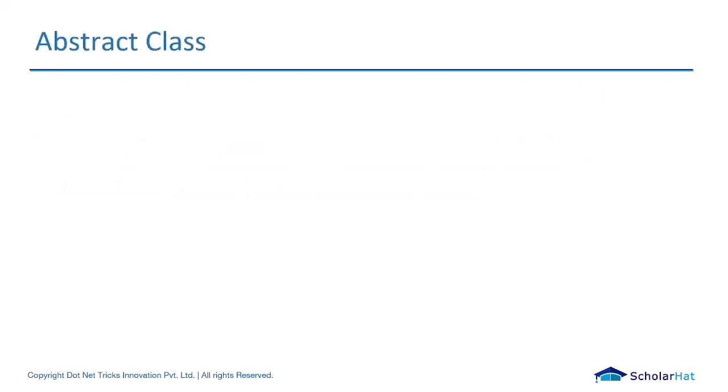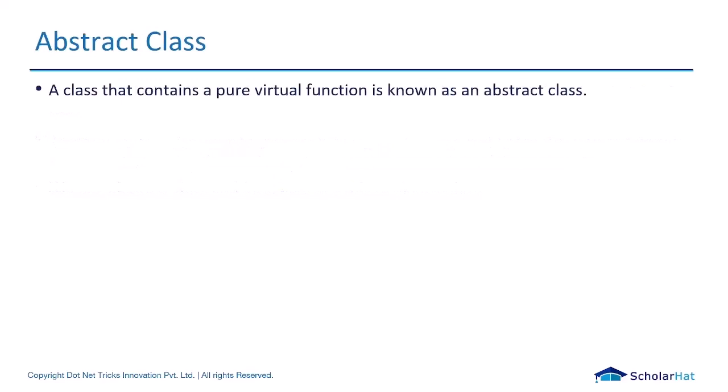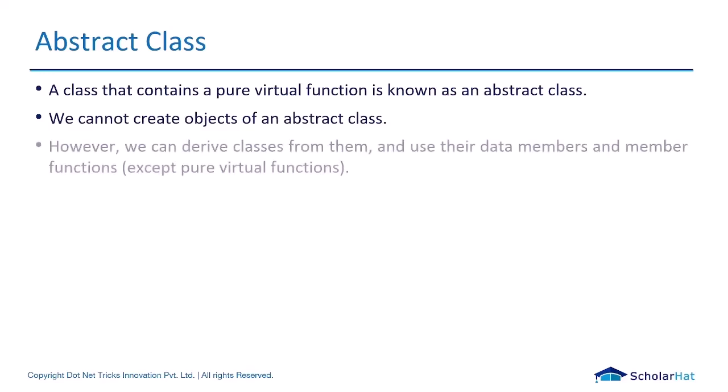The next thing is abstract class. A class that contains a pure virtual function is known as an abstract class — we already saw virtual functions. We cannot create an object for an abstract class. These are the key points for abstract class.